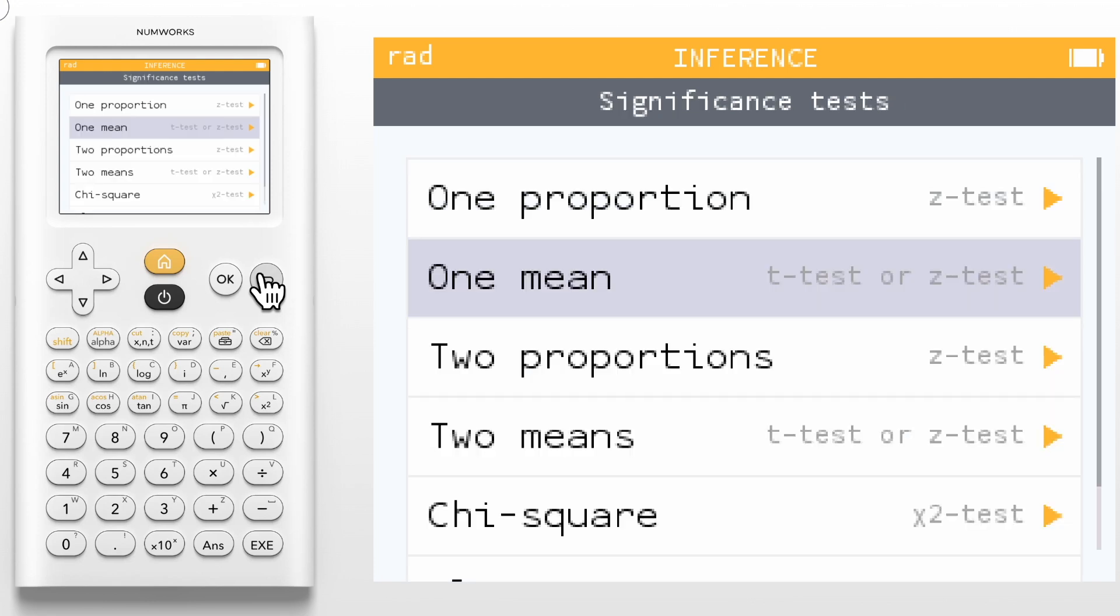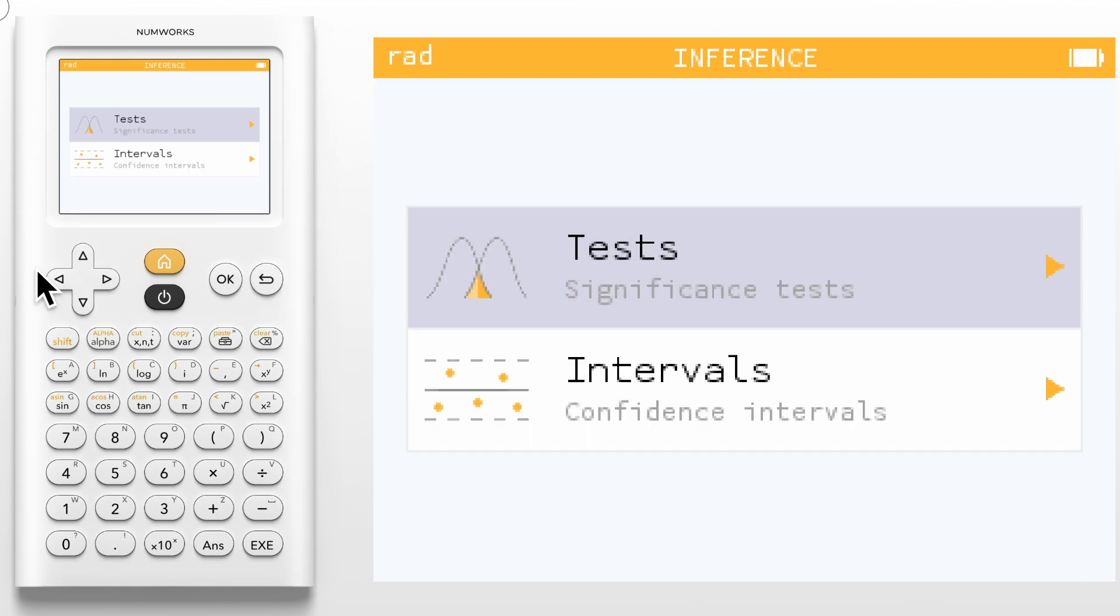These will all work in a similar fashion, but one thing to note is that your chi-squared tests have built-in tables to enter observed values and, if needed, expected values. Let's back all the way out and enter our intervals section.